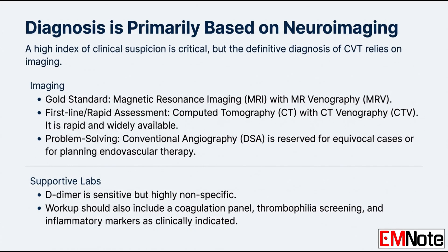D-dimer is sensitive, meaning a normal D-dimer may help rule CVT out, especially in low-risk scenarios. But it is notoriously nonspecific. In patients who are already hypercoagulable — like pregnant or post-surgical patients — it tells you something is clotting, but not where. It has to be supported by full coagulation panels and eventually a thrombophilia screen.